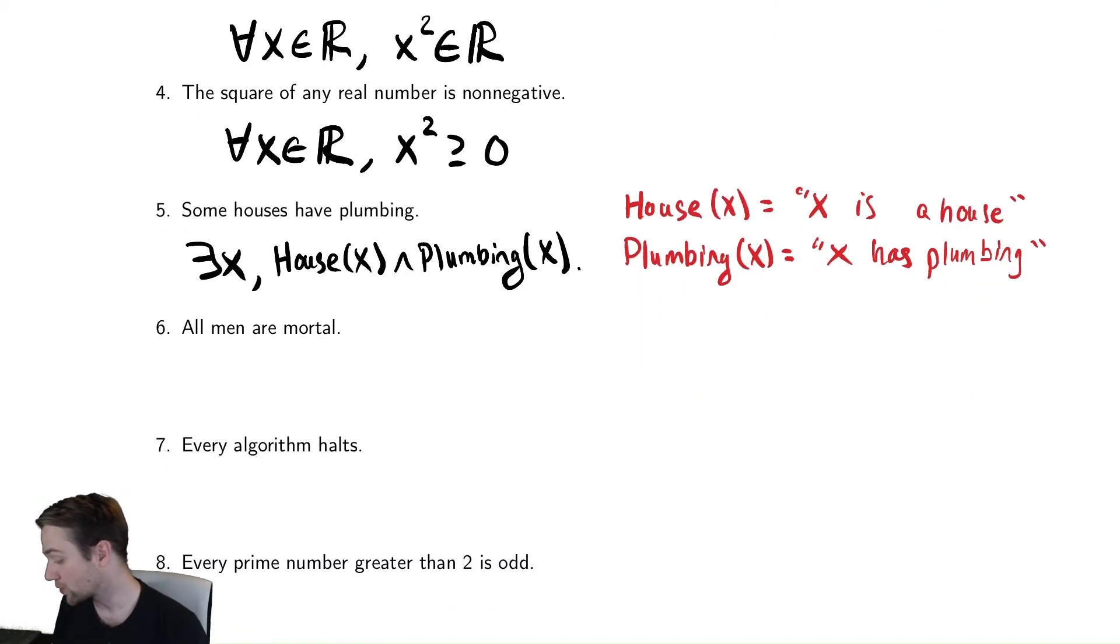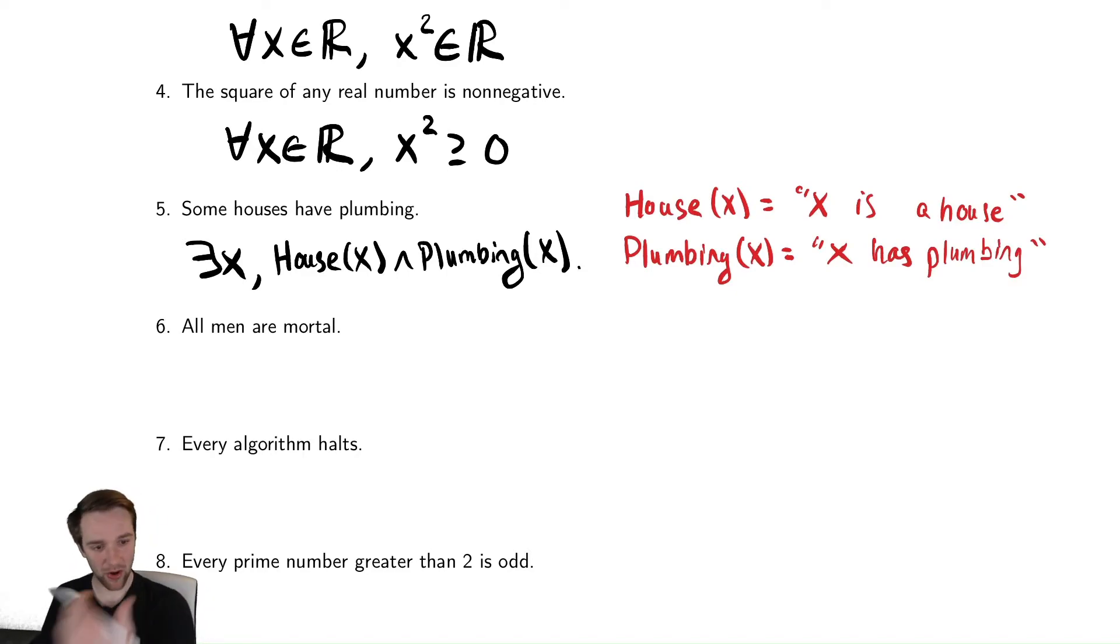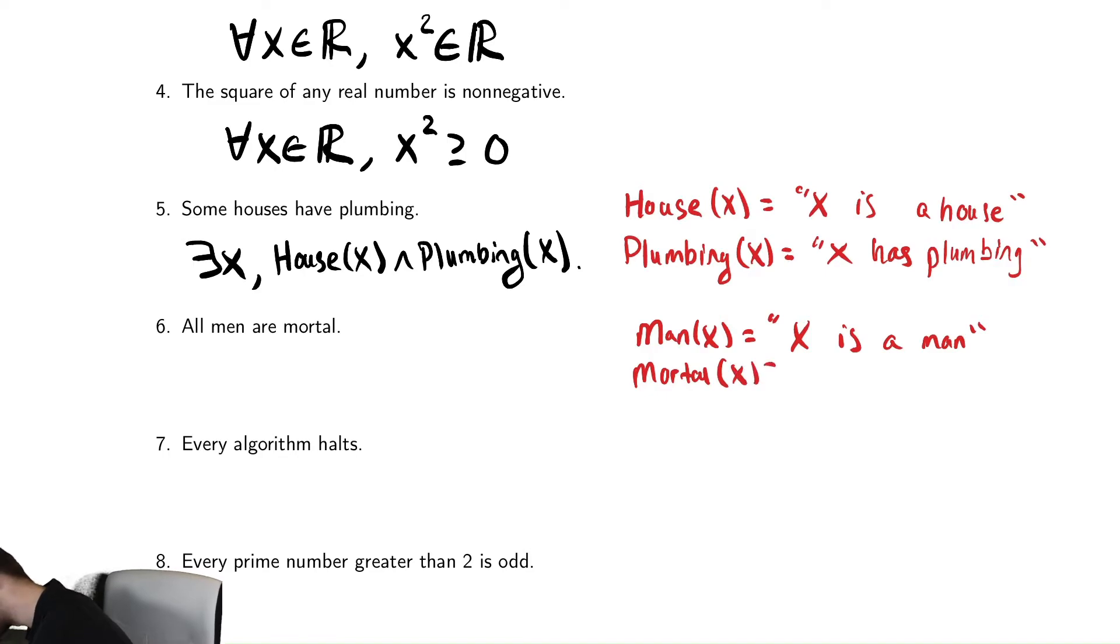The next one says all men are mortal. This one is a little awkward. So we're going to define our predicates again. We're going to say that men of x is x is a man. That's probably not what it wants us to do. In English, usually men in this sort of old timey sense meant just a person, but it says all men. So let's translate it directly. We're going to say x is a man. Maybe we call that man of x to make it a little less awkward. So we'll call that man of x. Then we'll have mortal of x, which is x is mortal.